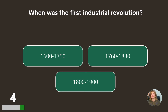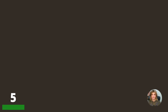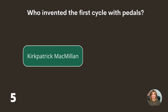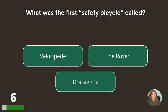1800 to 1900. Who invented the first cycle with pedals — Kirkpatrick MacMillan, Carl von Drais, or Gottlieb Daimler? Kirkpatrick MacMillan. What was the first safety bicycle called — velocipede, the Rover, or the Draisian? The Rover.